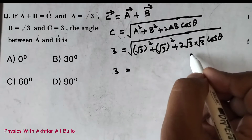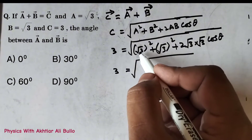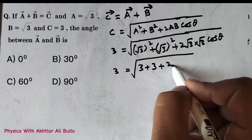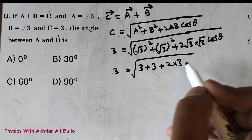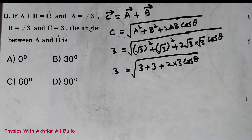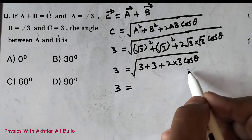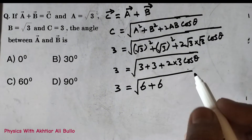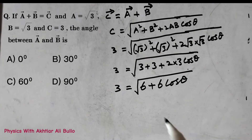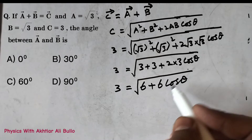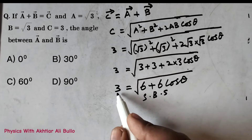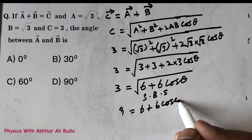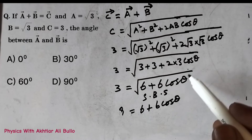So 3 equals √(3 + 3 + 2 × 3 × cosθ), which is √(6 + 6cosθ). To remove the square root, squaring both sides: 3² = 9 equals 6 + 6cosθ, since the square root gets cancelled.